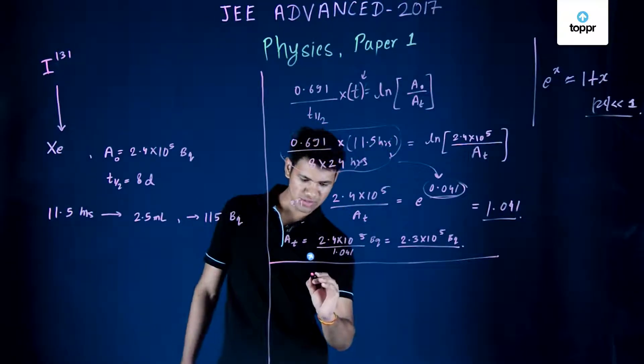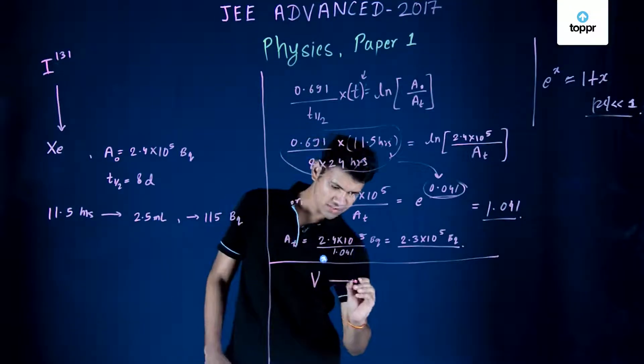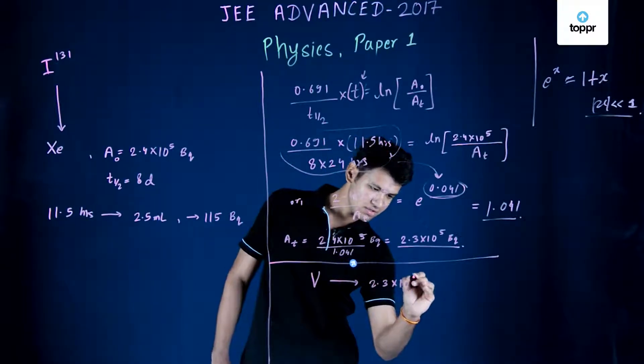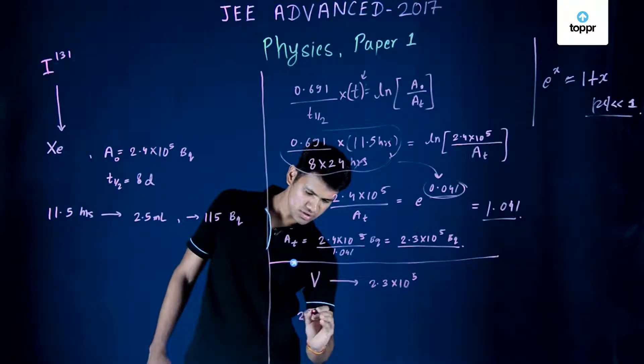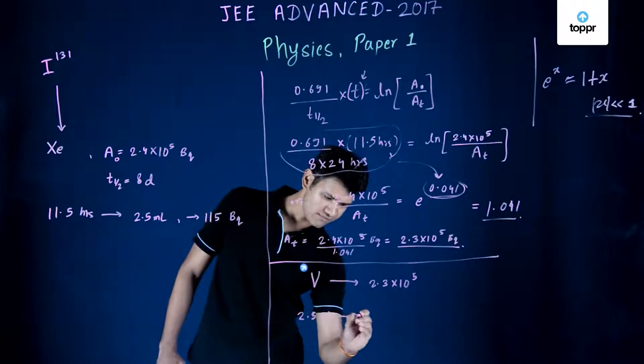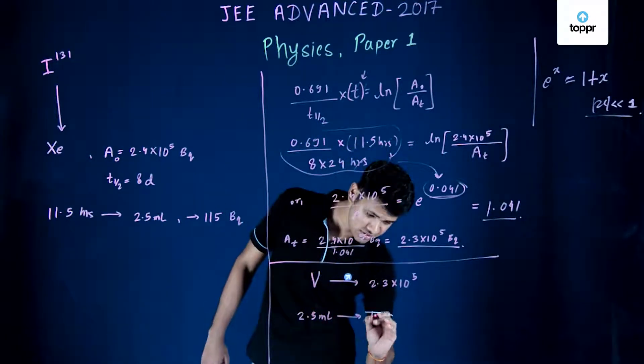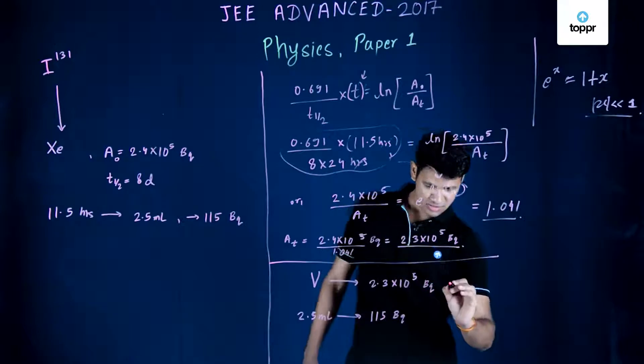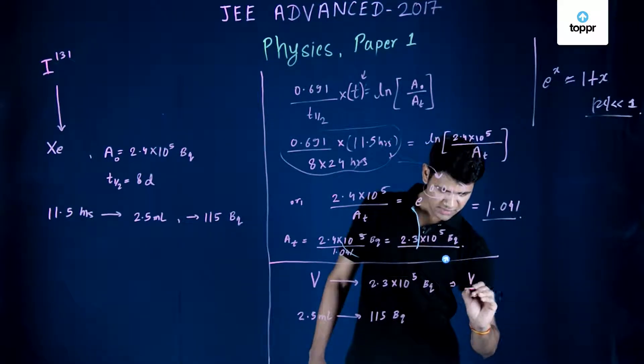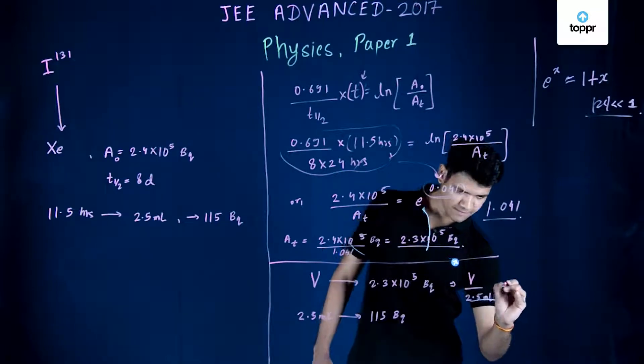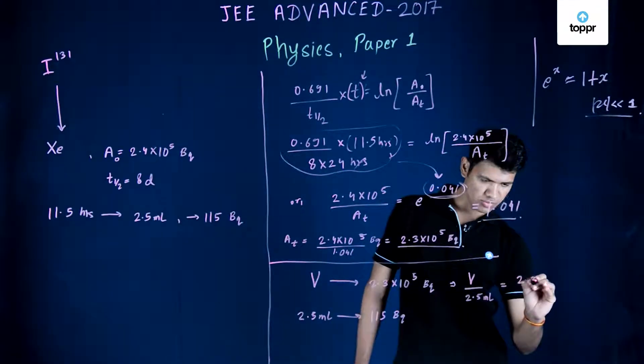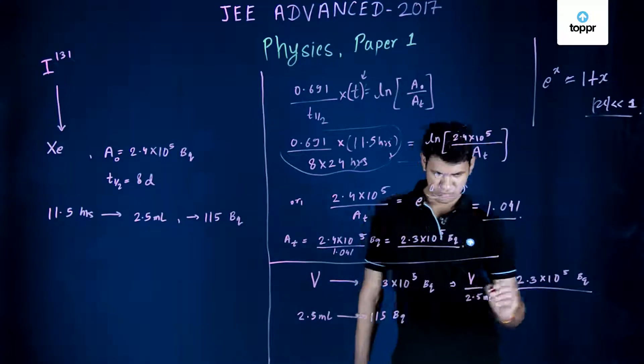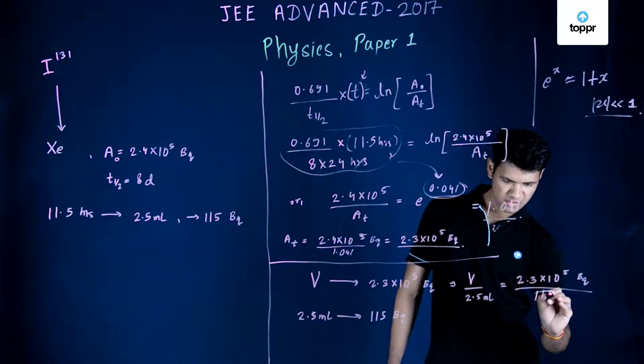Let us say that the total volume of human blood be V. In V we have this activity A_t which is 2.3 × 10^5 becquerel. And for volume 2.5 ml we have activity which was given to us 115 becquerel. Now simply solving it, V upon 2.5 ml gives you 2.3 × 10^5 becquerel upon 115 becquerel.